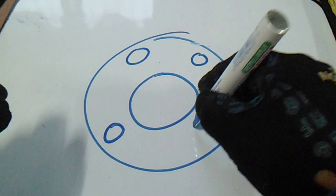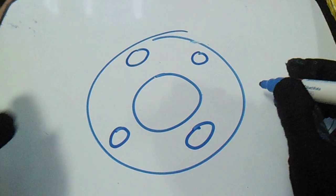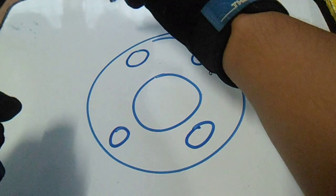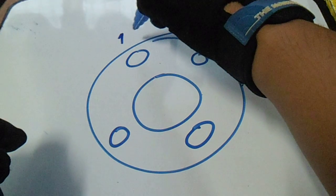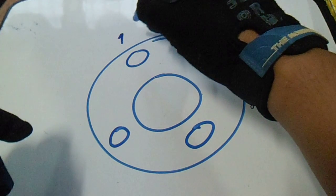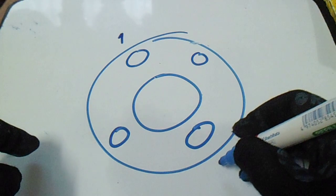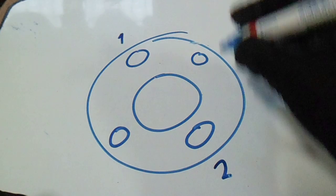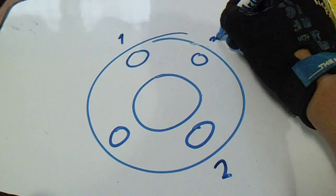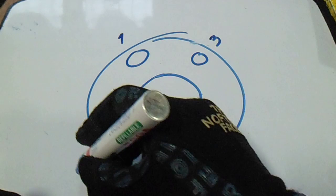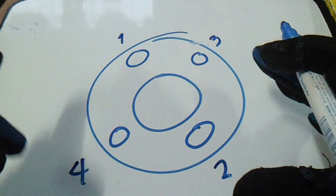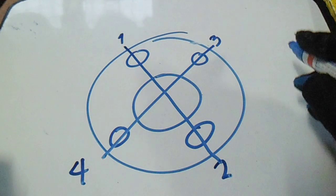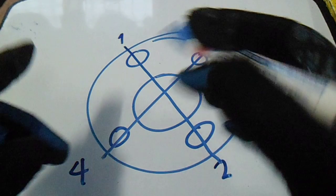two, three, four. So the tightening sequence for this flange is one - tighten this one, after tightening, next is number two, after finishing number two, three and then four. Okay, so this is the tightening sequence: one and two, three and four.